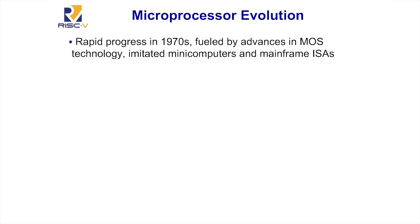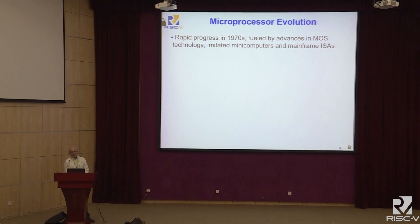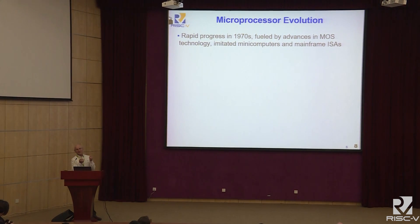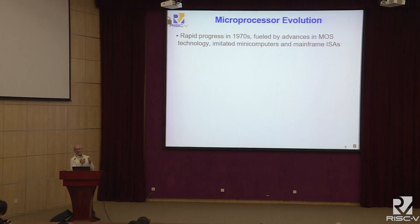Microprocessors had been invented but were just toys, though they were following Moore's Law. The people who made microprocessors didn't really understand computer architecture — that was the domain of mainframe companies like IBM or minicomputer makers like DEC. So microprocessor designers would study the manuals of minicomputer and mainframe manufacturers and imitate them.